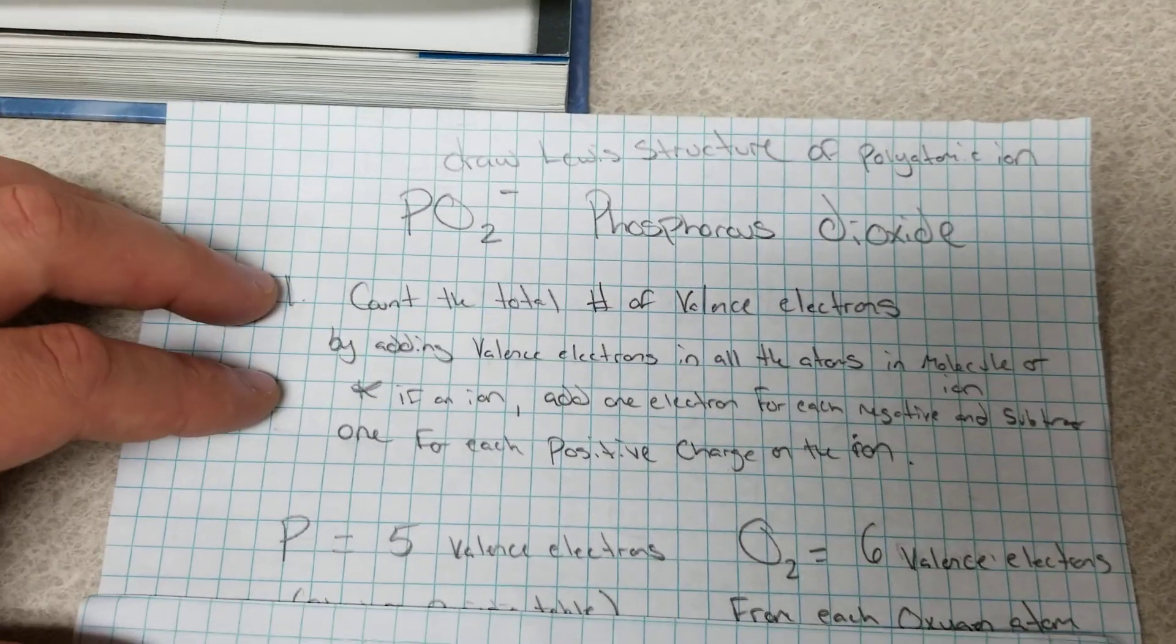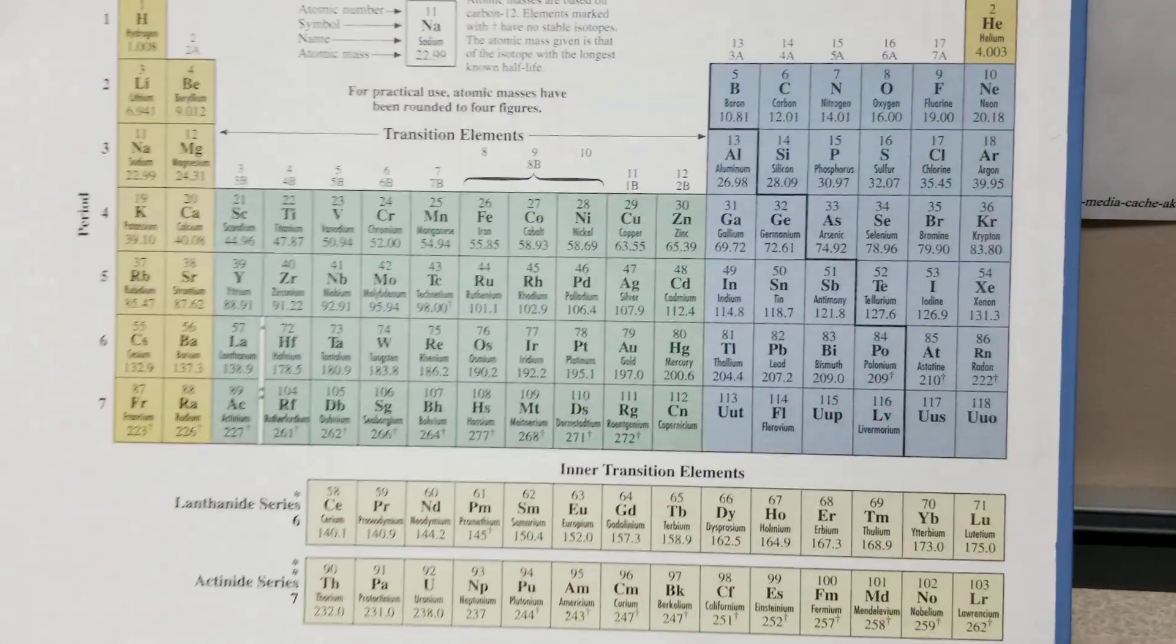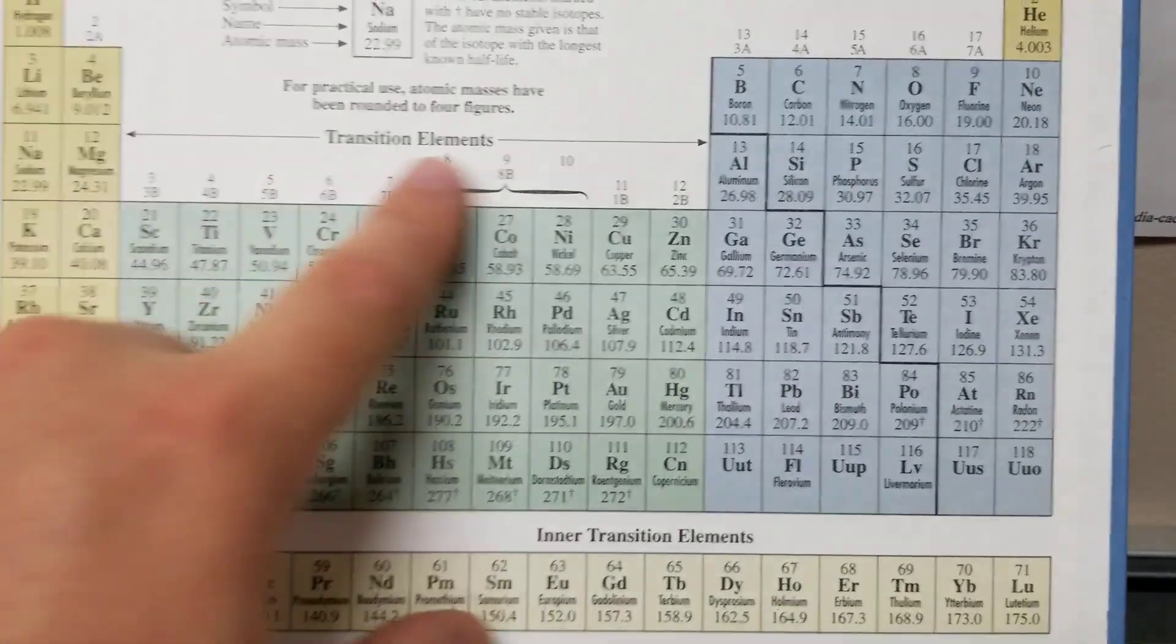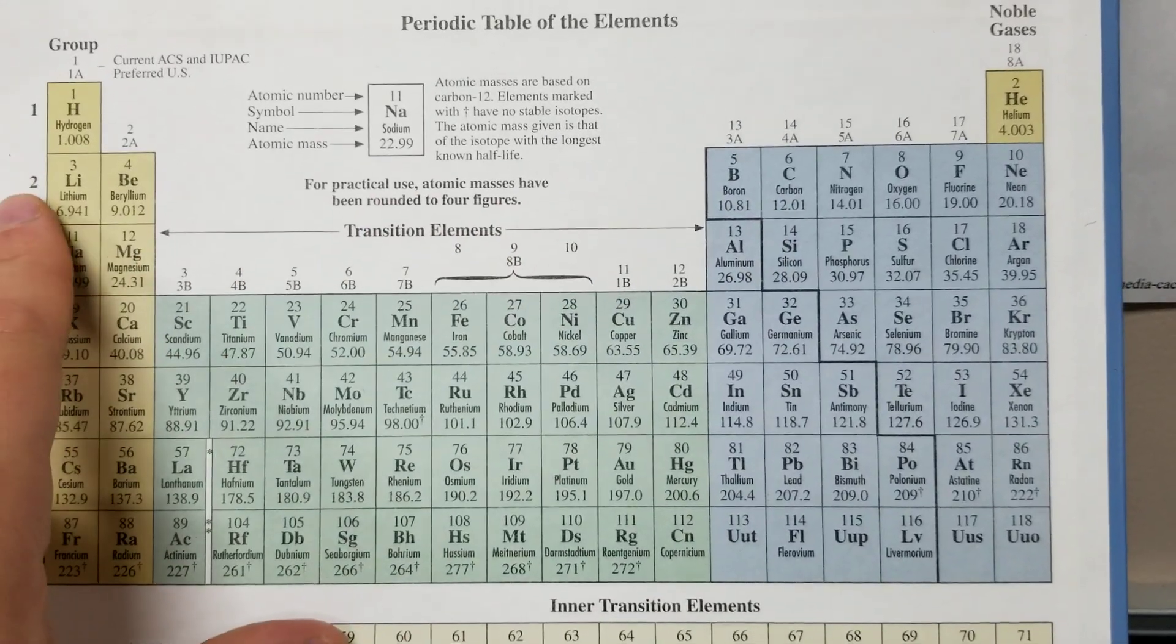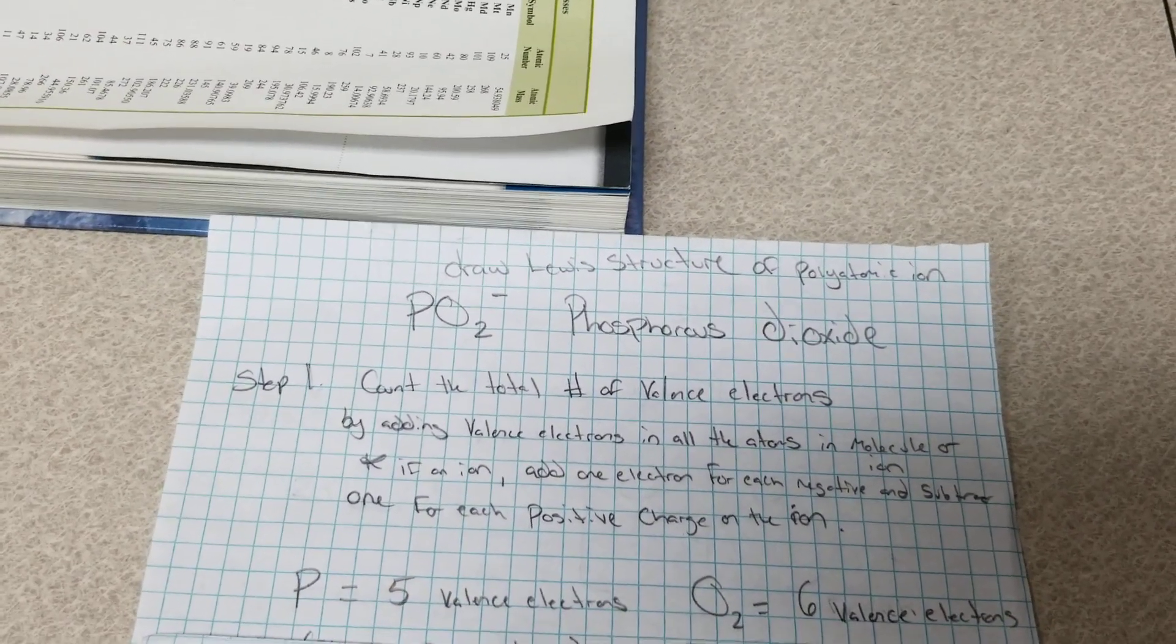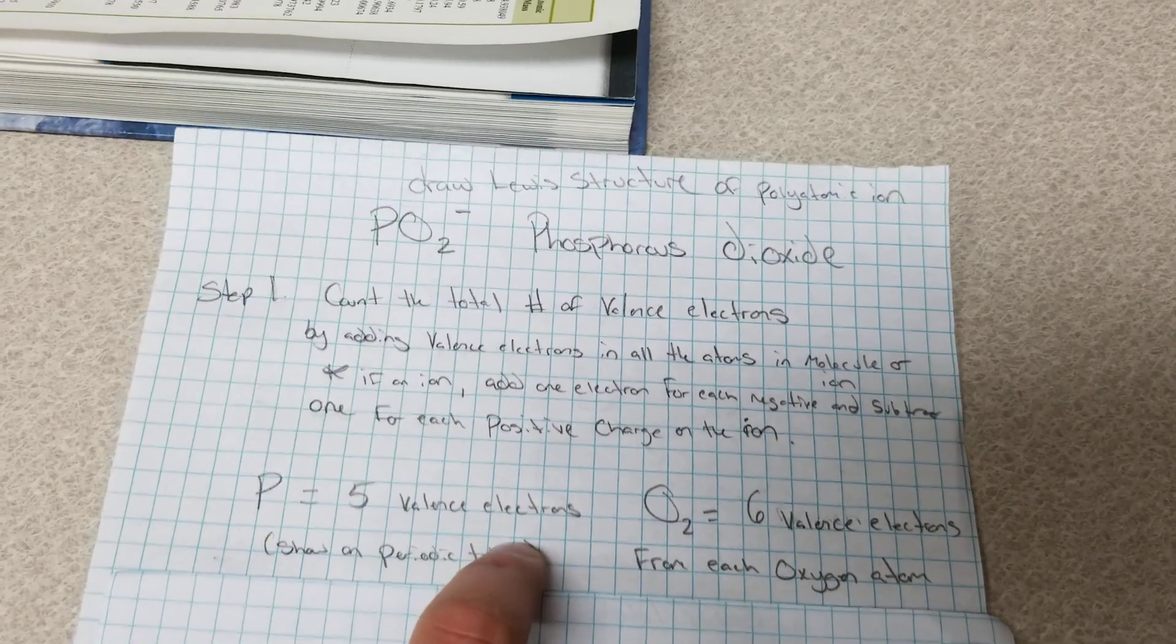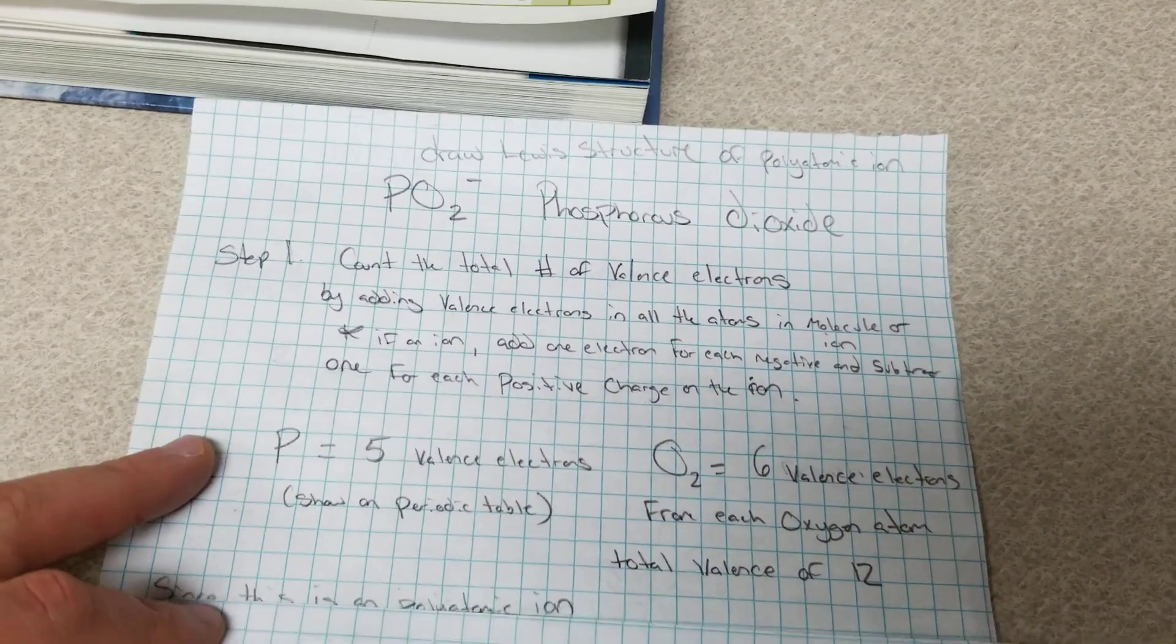The next atom in our compound, we have two oxygen. So we're going to identify oxygen on the periodic table and we see that oxygen has one, two, three, four, five, six valence electrons. And since we have two oxygen atoms we're going to add them together and we get a total of 12 valence electrons for the two oxygen atoms.